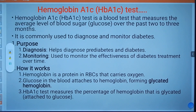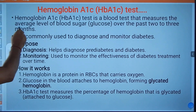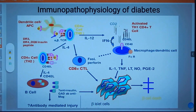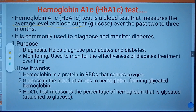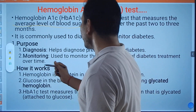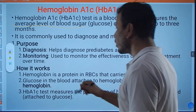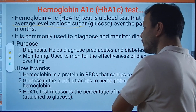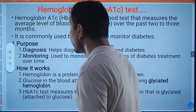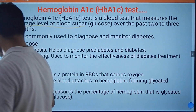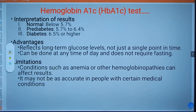The HbA1c test — the Hemoglobin A1c test — is a blood test that measures the average level of blood glucose over the past two to three months. It is commonly used to diagnose and monitor diabetes. Its purposes include helping diagnose pre-diabetes and diabetes, and monitoring the effectiveness of diabetes treatment over time. Hemoglobin is a protein in red blood cells that carries oxygen; glucose in the blood attaches to hemoglobin, forming glycated hemoglobin. This test measures the percentage of hemoglobin that is glycated.